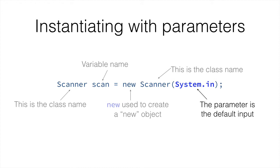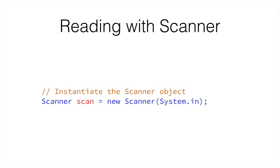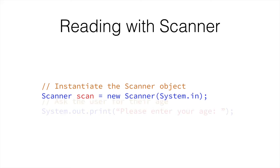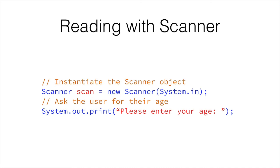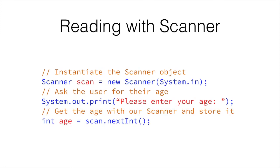So how do we actually use the scanner? Once we have it created, how do we use it for reading? The first thing we do is instantiate the scanner object, or create a new scanner object. Then we can ask the user for their age, like this: System.out.print — please enter your age. Notice how this print method doesn't have ln at the end of it. This is because println adds a carriage return or a new line at the end of the line, while print by itself doesn't. You'll see in the programming example why print is different to println and why we use print in this case.